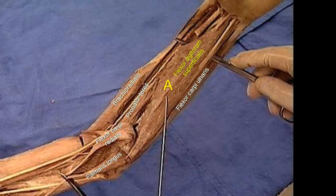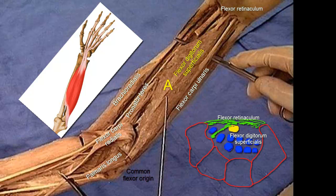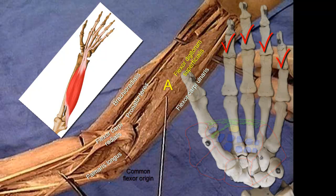You can follow the origin of the muscle and note that it arises in continuity from the common flexor origin at the medial epicondyle of the humerus. Then the origin extends obliquely across the forearm as it arises from both the ulna and the radius. The muscle is supplied by the median nerve, which supplies all the muscles of the flexor compartment of the forearm except one and a half muscles. The flesh of the muscle gives rise to four tendons to the medial four digits. The tendons pass deep to the flexor retinaculum and are ultimately inserted into the middle phalanges of the medial four digits.